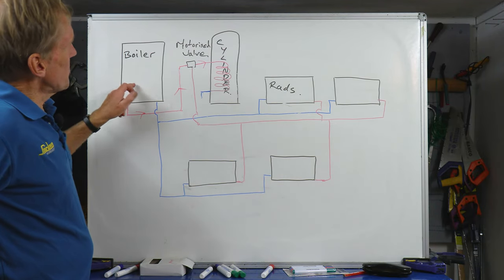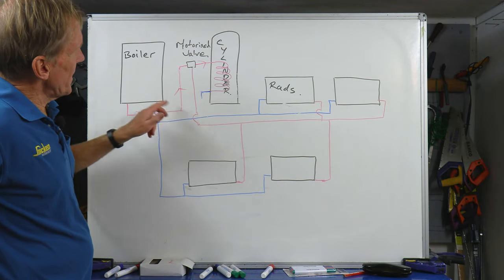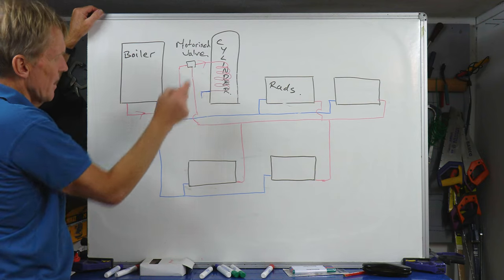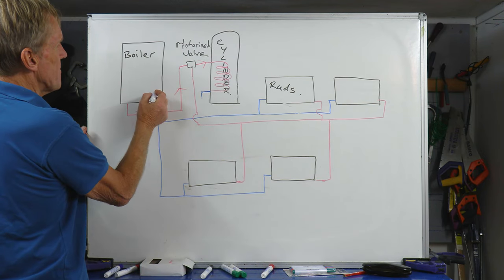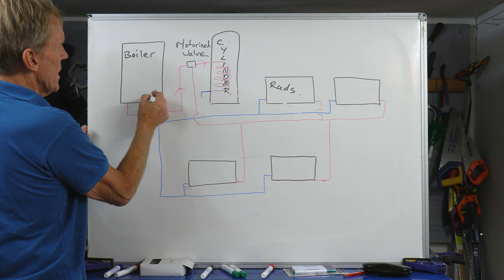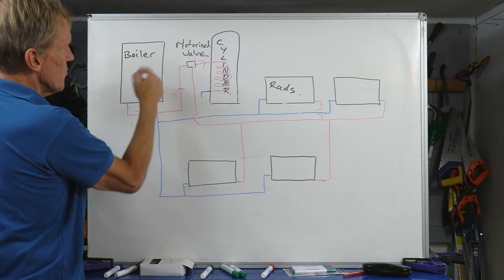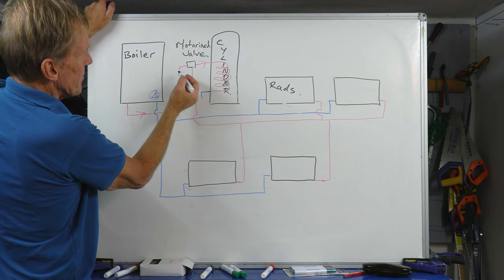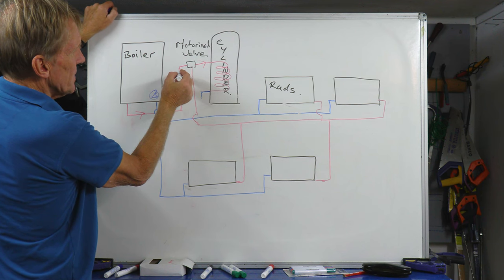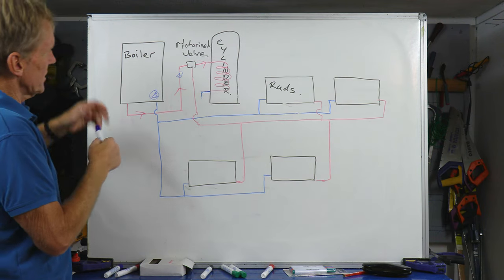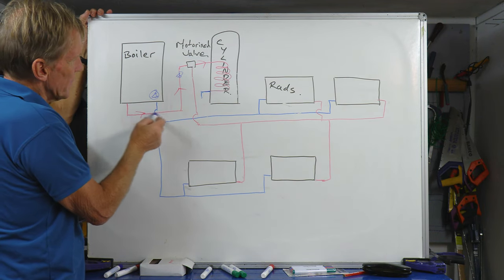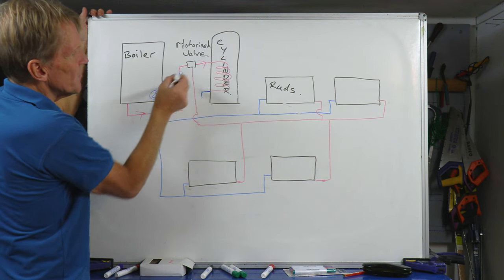So what we have here is a boiler, a cylinder, an airing cupboard with a motorized valve in it. In this case it's a system boiler so we've got our pump in the boiler and it's pumping all around. You could have the pump in this position here in the airing cupboard, but whatever you do, basically you've got the hot water flowing out of the boiler into the motorized valve.